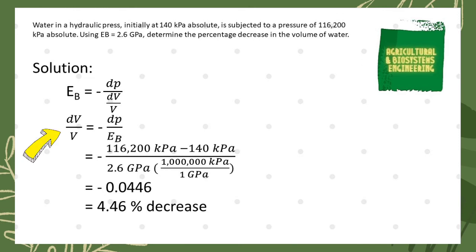We now have percentage decrease in volume equal to negative DP or difference in pressure, divided by the bulk modulus of elasticity. We already knew our necessary values, so we just simply substitute it to the formula. We now have 116,200 kPa minus 140 kPa divided by 2.6 GPa.